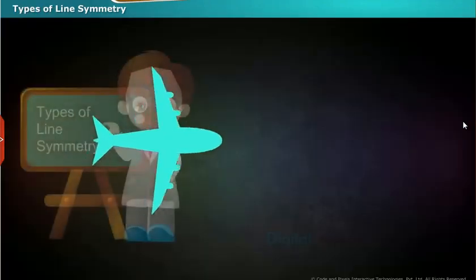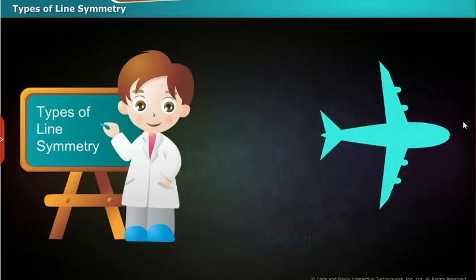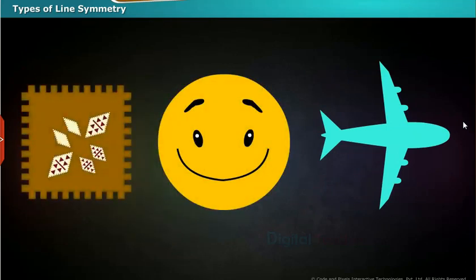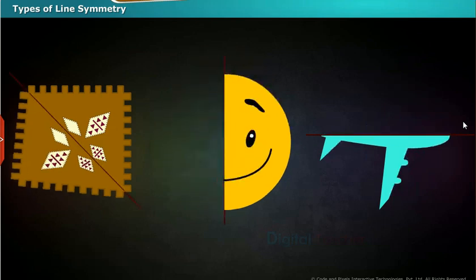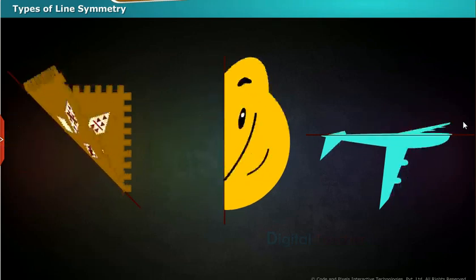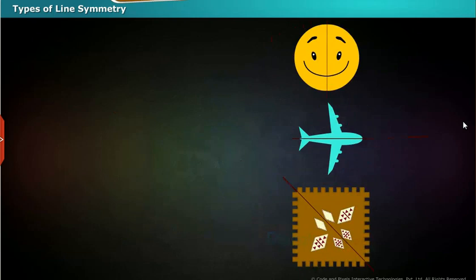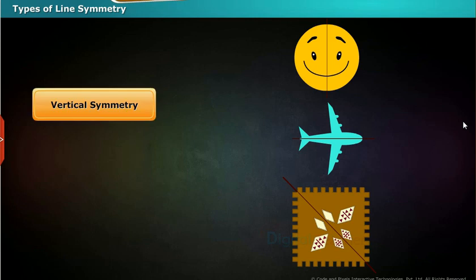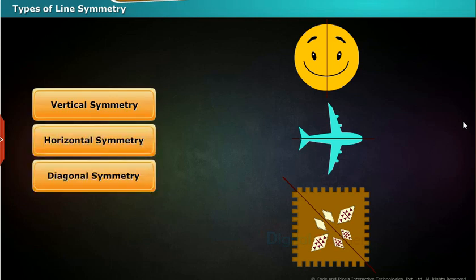Now let us see the types of line symmetry. We find pictures matching exactly when folded horizontally, vertically, or diagonally. So we conclude that there are three types of line symmetry: vertical symmetry, horizontal symmetry, and diagonal symmetry.